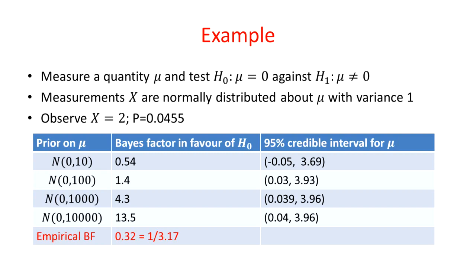Going back to our example, the empirical Bayes factor is now less than one, pointing towards a value of mu different from zero. And that's now concordant with the parameter estimates and the p-value.